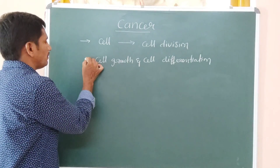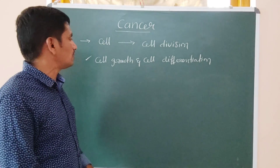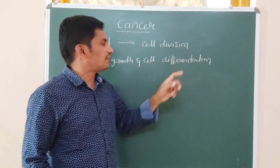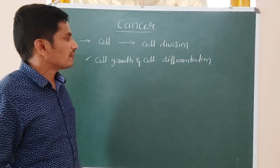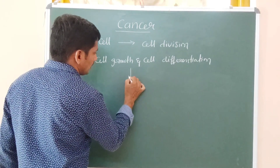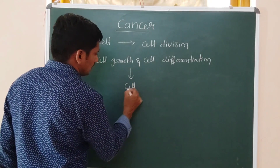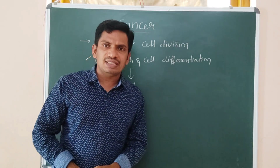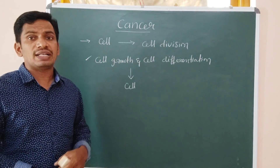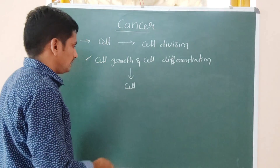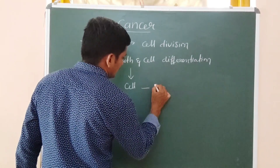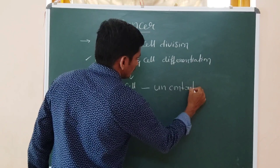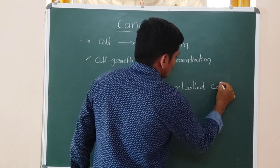In human beings, all cells undergo cell growth and cell differentiation in a regulatory manner. So when a cell loses its controlled cell division — when it becomes uncontrolled cell division — then it can cause cancer. Uncontrolled cell division.